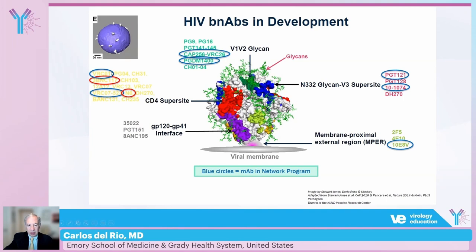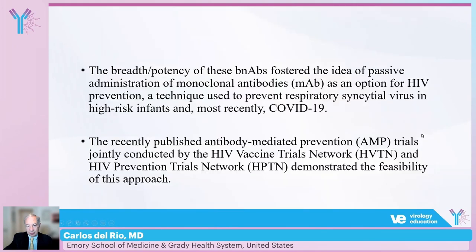The one we're going to discuss most is VRC01. VRC01 is an antibody developed at the Vaccine Research Center of the NIH and is directed against the CD4 super site. Because of the breadth and potency of some of these BNAbs, passive administration has been considered as an option for HIV prevention. This is not something new — we've used this approach for respiratory syncytial virus in high-risk infants, and most recently through the use of monoclonal antibodies for prevention and treatment of COVID-19.